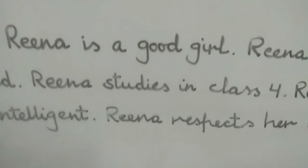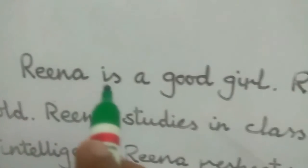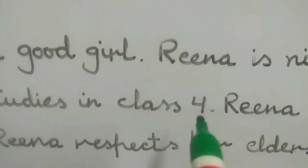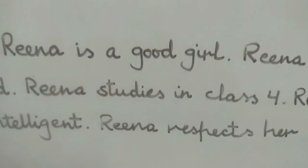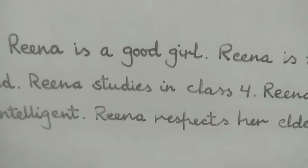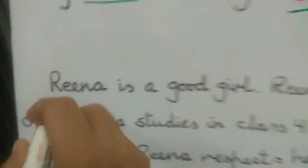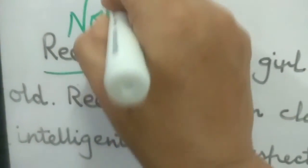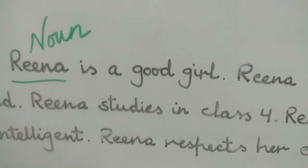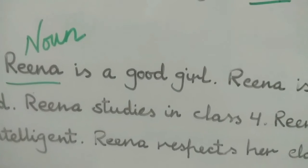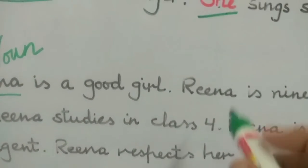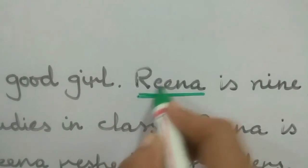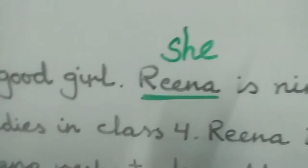Now here is one exercise. See it carefully. 'Reena is a good girl. Reena is 9 years old. Reena studies in class 4. Reena is very intelligent. Reena respects her elders.' In this paragraph, I am talking about a girl named Reena. Reena is a noun, but we do not write or speak nouns repeatedly. We have to replace this word with a pronoun, so here I will write 'she'. For Reena, for girls, we use the pronoun 'she'.